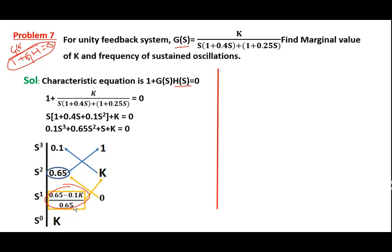Now, how are we going to find out the marginal K value? By equating the S¹ row element to zero: 0.65 minus 0.1K equals 0, so 0.1K equals 0.65, giving K equal to 6.5. If we substitute K equal to 6.5, the first element of the S¹ row will become 0.